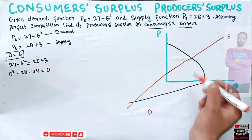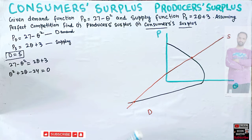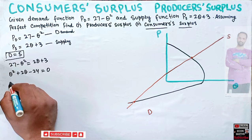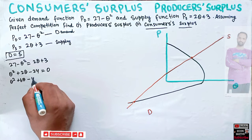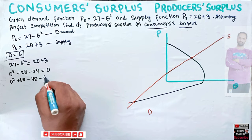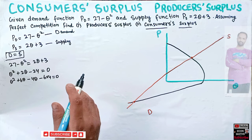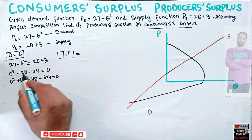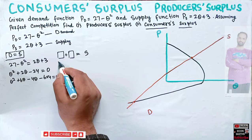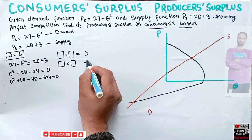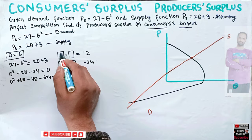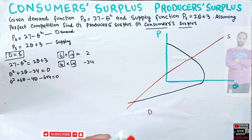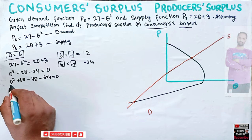Let us solve the quadratic by factoring. We have Q squared plus 2Q minus 24 equals zero. Splitting the middle term: we need two numbers whose sum is 2 (the middle coefficient) and whose product is minus 24. Those numbers are 6 and minus 4, since 6 plus (minus 4) equals 2 and 6 times (minus 4) equals minus 24. So we split: Q squared plus 6Q minus 4Q minus 24 equals zero.